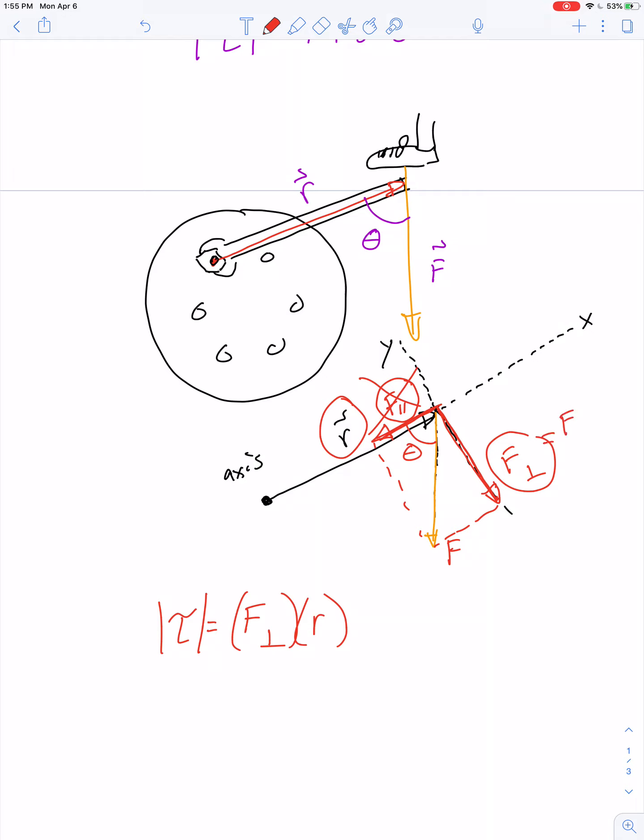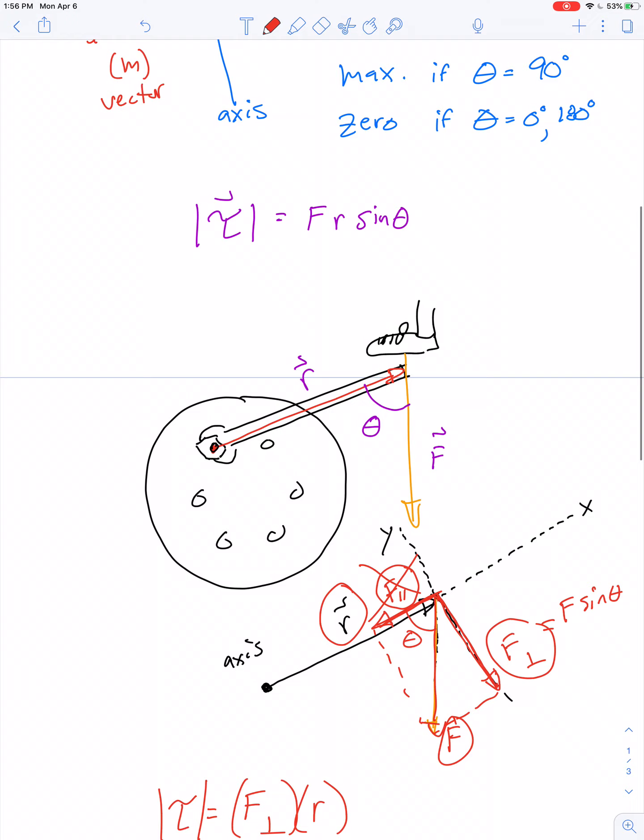The perpendicular component, if we define this angle as theta, is nothing more than the original force F multiplied by the sine of that angle: F sin(θ). This is where the expression magnitude of torque equals force times lever arm times sine of the angle comes from. I'm associating the force with the sine to get the perpendicular component of the force to the lever arm.